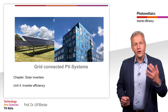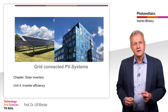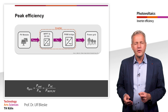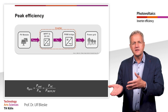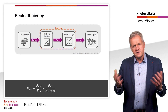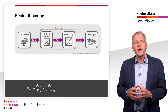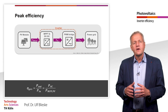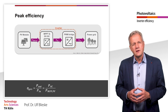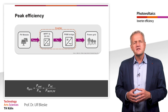Welcome to the next learning unit in the chapter on solar inverters. In the last unit we learned about different ways to convert direct current into alternating current. An essential criterion for being able to compare different inverters with one another is their efficiency. Let's look at how this efficiency is defined.